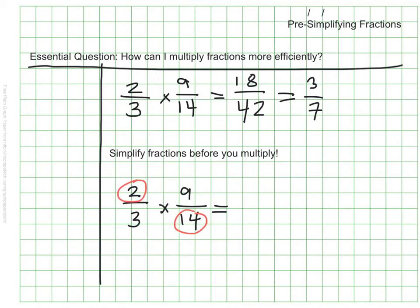The 2 and the 14 represents one numerator and one denominator. If I look at that I notice that they have a common factor. They both have a factor of 2. So I'm going to divide both of them by 2.